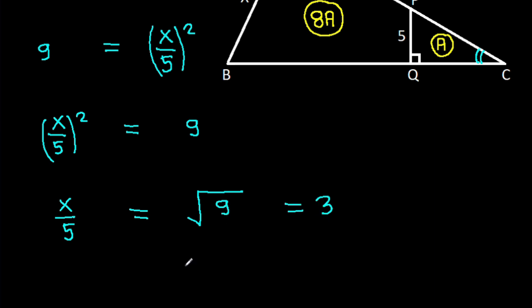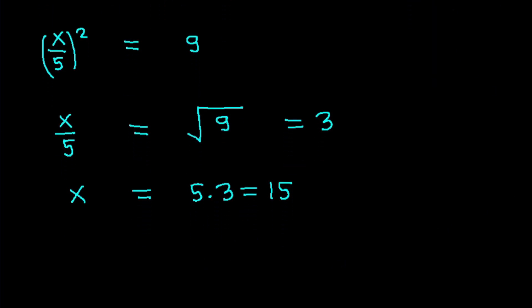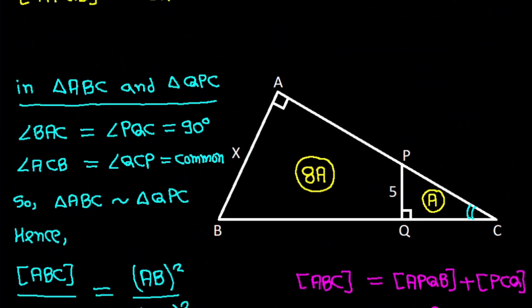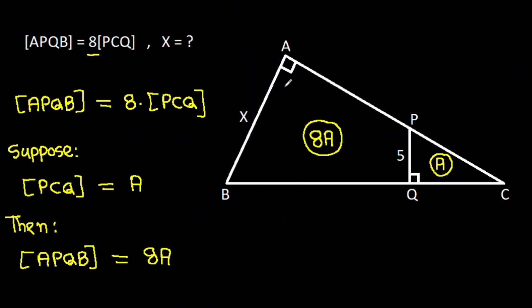So X will be 5 times 3, that will be 15. So we get X is 15.